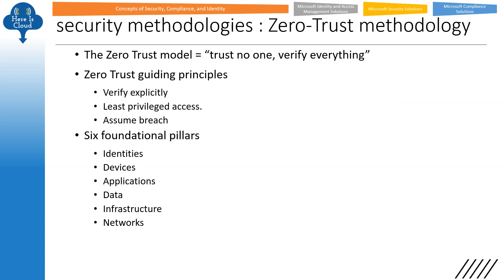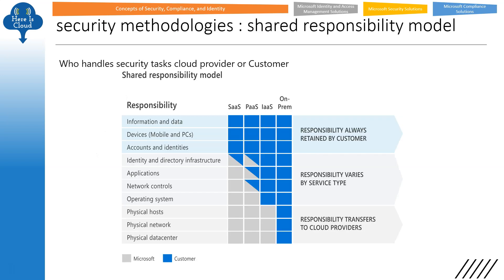You'll see a lot of things like security methodology: what is the Zero Trust model — 'trust no one, verify everything.' Zero Trust guiding principles — there are three, no way but to remember this. There are six foundation pillars: identity, devices, application, data, infrastructure, network. You need to remember these by heart.